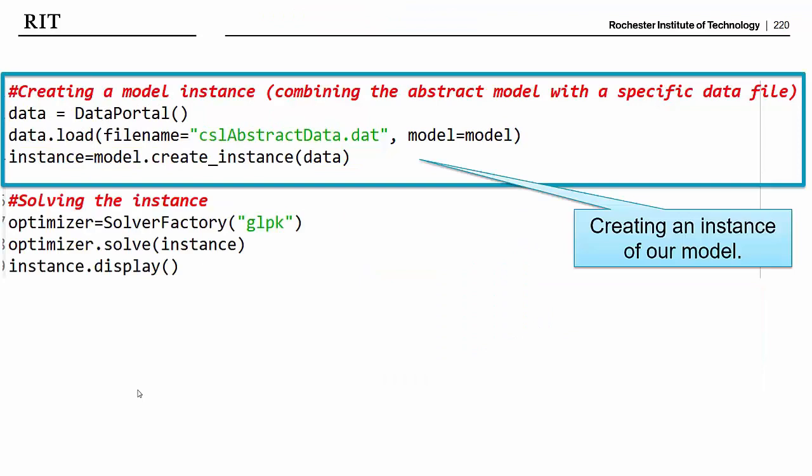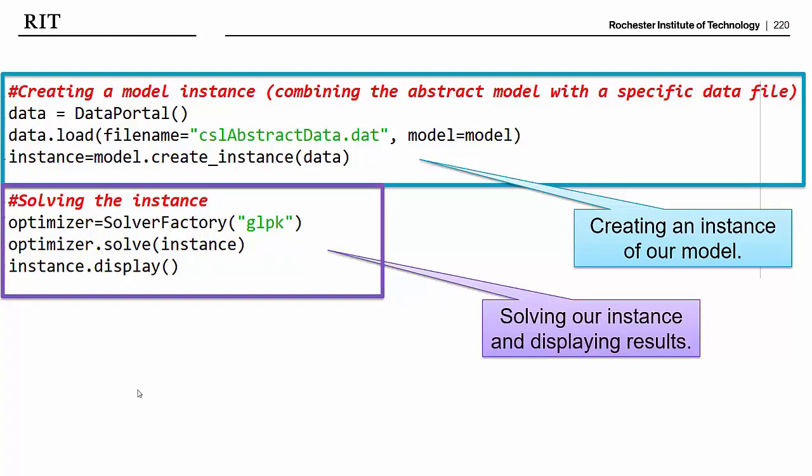So we have here our first three lines, which we just went over, and these first three lines have created a model instance. These second three lines, which we'll go over shortly, are going to solve our instance and display the results. But before we do that, I want you to add one more line in between these two sections of code. I want you to add the line instance.pprint. And what this function does is it will print out the model that's made from combining our model and our data file together. It's basically going to print out the concrete model. And let's see how this works.